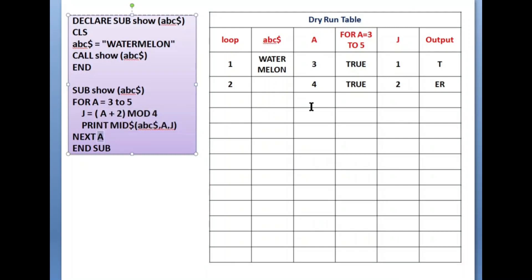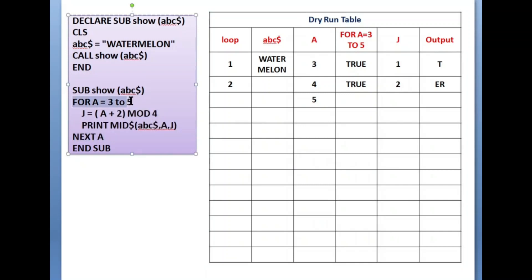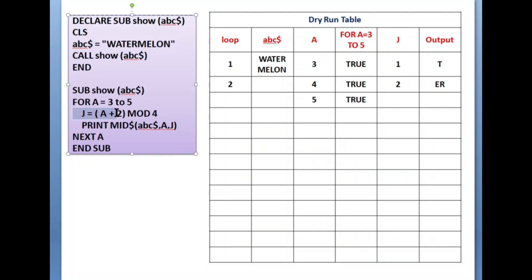NEXT a — value of a incremented from four to five. It goes back to the FOR loop. The loop runs up to five, and a is five, so the condition is still true. Inside the loop: j = (a + 2) MOD 4. a is five, so five plus two is seven; seven MOD four — divide seven by four, remainder is three. j equals three.